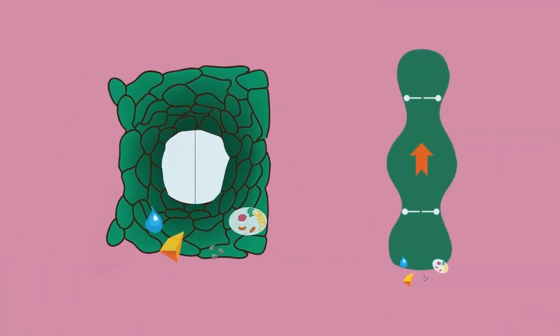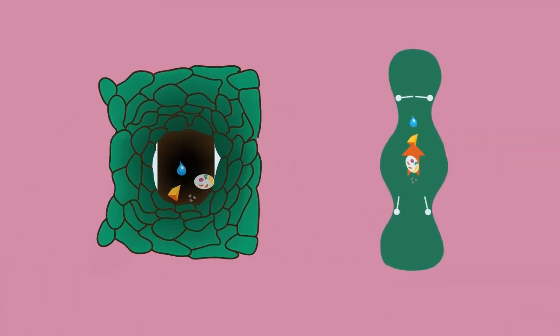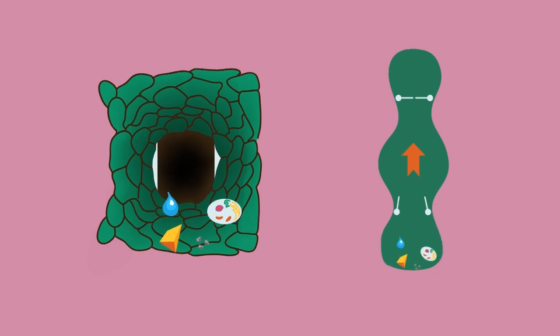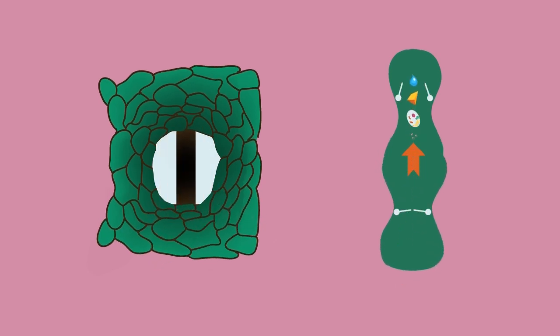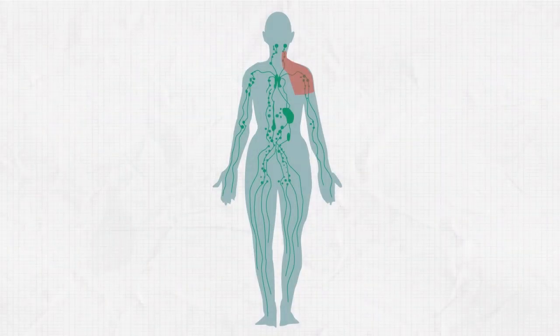The pumping happens because each little lymphatic vessel has valves at each end that keep the fluid moving in the right direction. The vessel squeezes to keep the fluid moving along. This is happening in millions of little lymphatic vessels in your body every minute of every day.